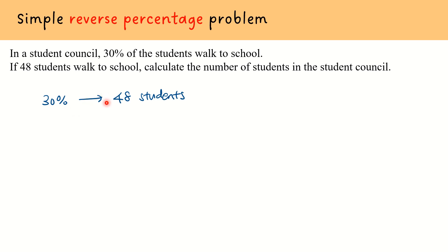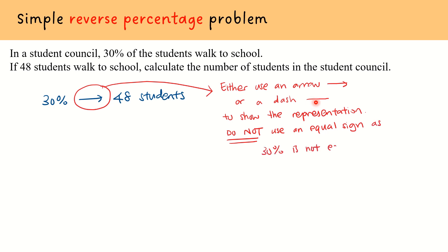So in this representation, we either use an arrow sign or we can use a dash. Do make sure that your dash line is actually longer, otherwise it may be misunderstood as a minus sign. So do not use an equal sign. As mentioned, 30% is not equal in value to 48. This statement is what we could deduce from the first part of the question.